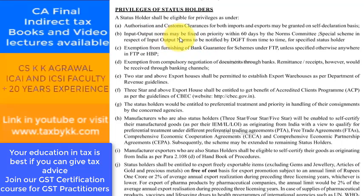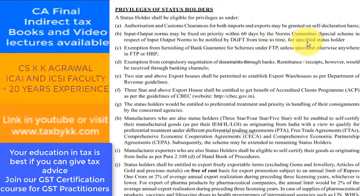Benefit 2: Input-output norms may be fixed on priority within 60 days by the norms committee. A special scheme in respect of input-output norms is to be notified by DGFT from time to time for specified status holders.